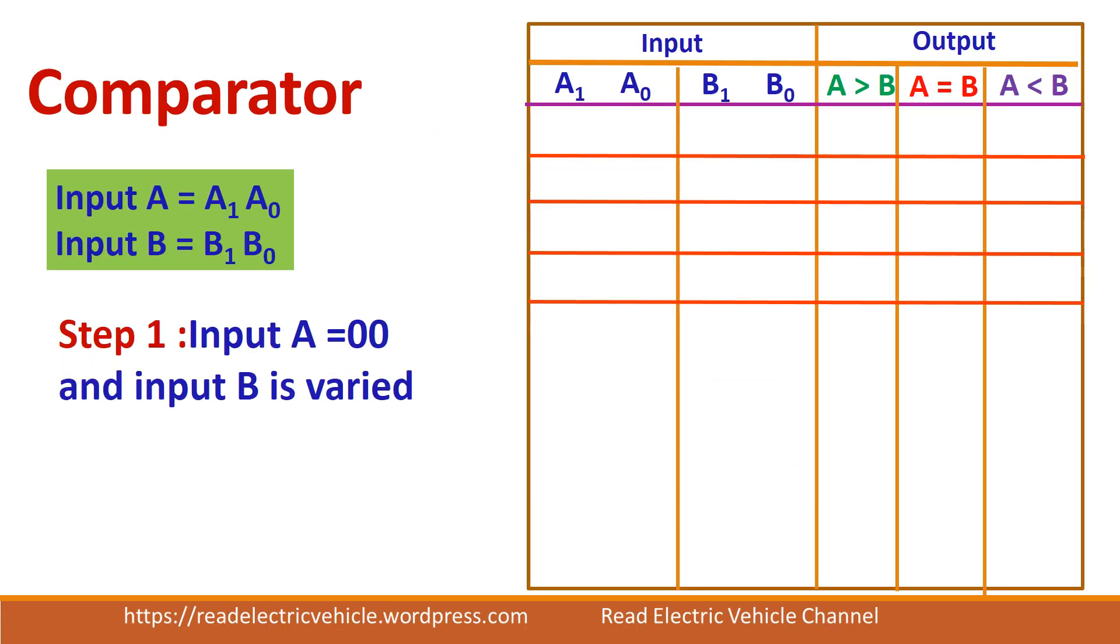Let us design the comparator now. We know there are 2 inputs A and B. So these are the 2 bits of A and these are the 2 bits of B. Output, we have 3 options.